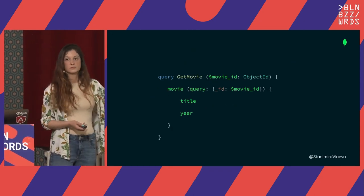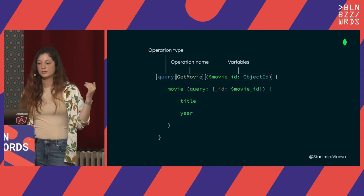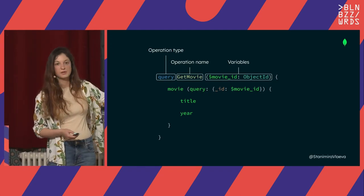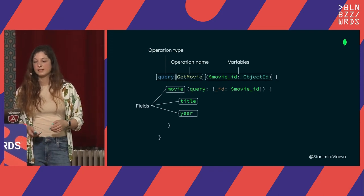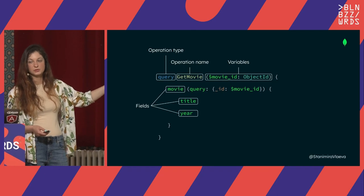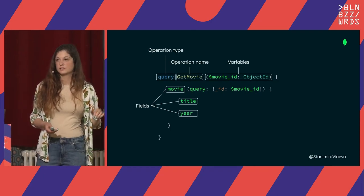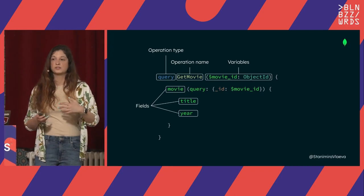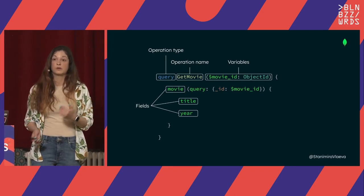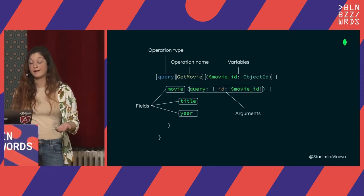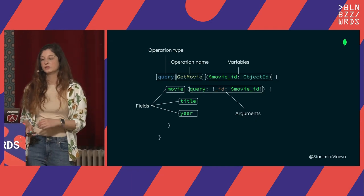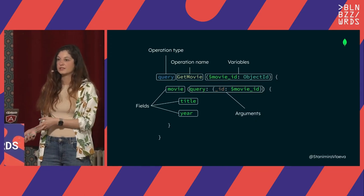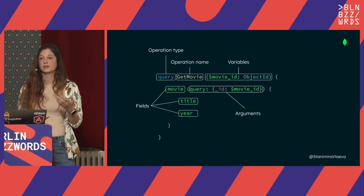If we take a look at one query: first we have the operation type — operation query. Then we have the name of the operation. Then we have the variables. Every single field we see here is something we can get from the API. These fields should correspond to functions that know how to resolve the data. Next to the fields, we have arguments — every single field can have an argument, not just the top-level field. Our server should know how to read this, parse these arguments, and what to do with them.